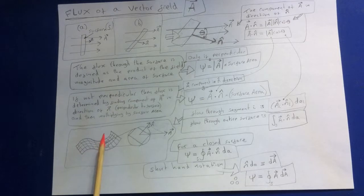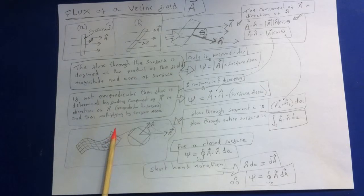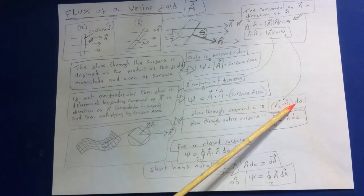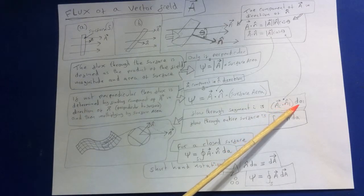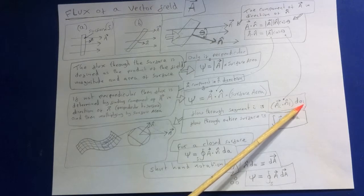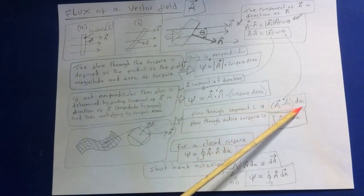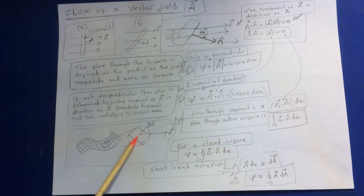So we're going to let n hat i represent the unit normal for the ith segment of area da i. The flow through segment i is A i dot n i times the small segment of area da i. Of course, this represents the flow through the segment i, so this here represents the flow through this small tiny segment i.